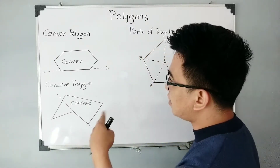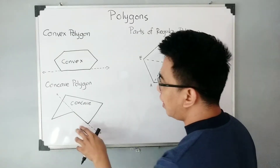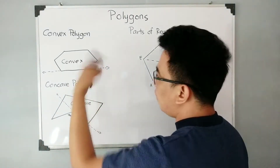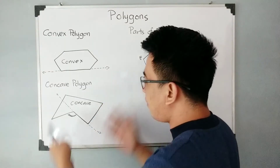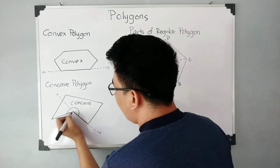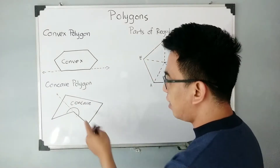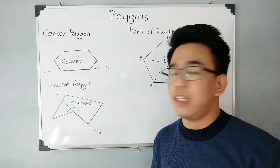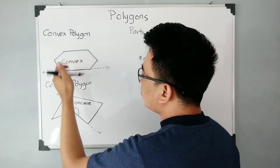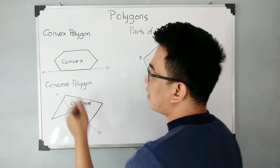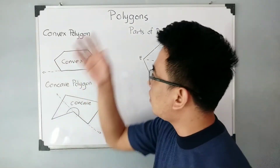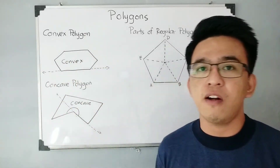Another thing you can observe is the difference between concave and convex: in a concave polygon, there is a cave-like shape formed on the outside, whereas in a convex polygon, there is none — that's why it's called concave, because it has a cave formed on the outside. Furthermore, one of the angles in a concave polygon is a reflex angle, meaning that interior angle is greater than 180 degrees. For a convex polygon, all interior angles must be greater than zero but less than 180 degrees.